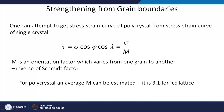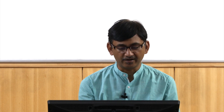Looking at strengthening from grain boundaries, you can give a relationship similar to what we saw in the single crystal: tau equals sigma times cos-phi times cos-lambda, and this cos-phi times cos-lambda you can replace by sigma divided by m, where m is an orientation factor that varies from one grain to another and is the inverse of the Schmid factor. For a polycrystal, an average m can be estimated — it is around 3.1 for the FCC lattice, with different values for BCC and HCP.